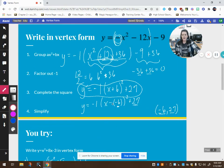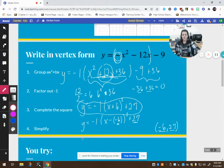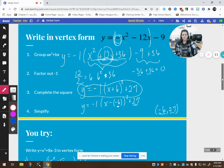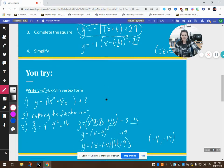All right, so now I want you to try this problem that you see right here. Y equals x squared plus 8x minus 3. Pause the video, have it on a piece of paper, and try to work this problem out.